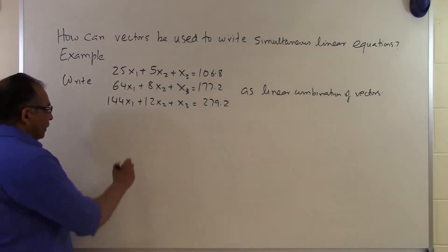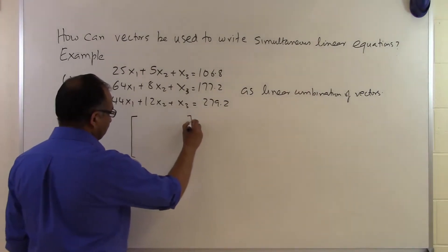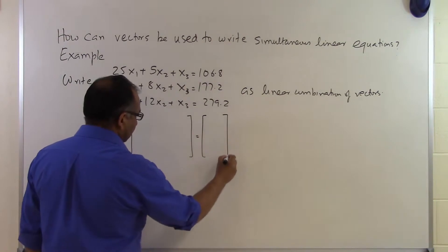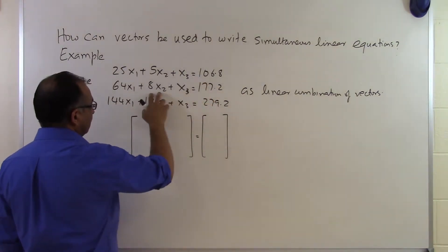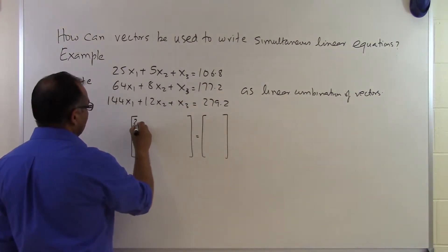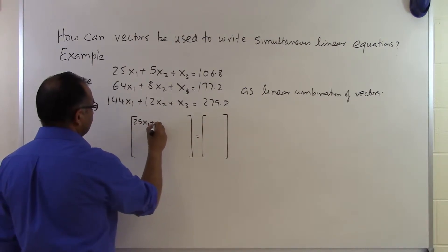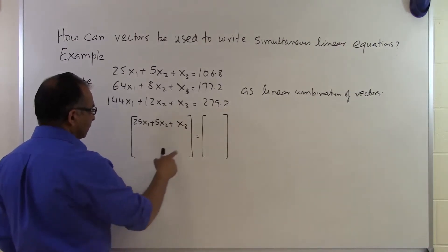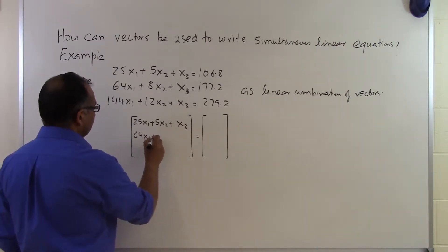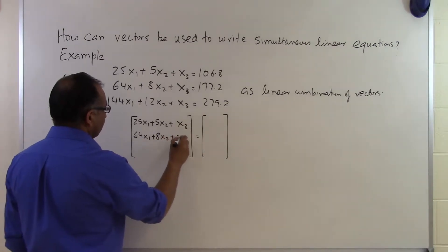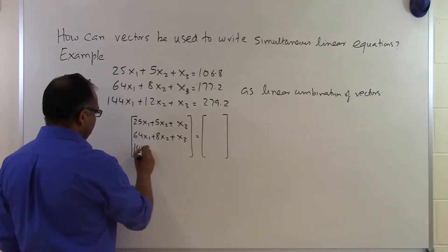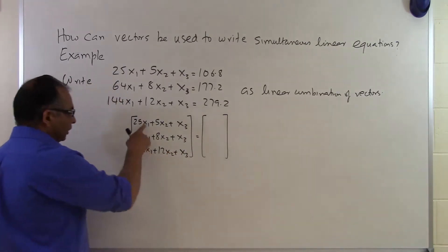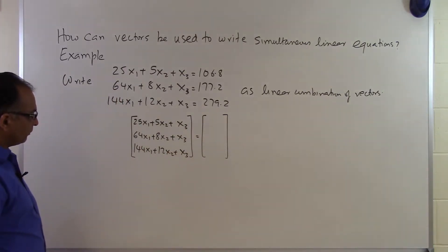So what I want to do first is write this in vector form, the left side and the right side. You can very well see that the left side equals the right side for each of these three equations. I'm going to make each of the three left sides as components of this vector right here. The next component is 64x1 plus 8x2 plus x3, and the next is 144x1 plus 12x2 plus x3. So I got these three components in my left matrix right there.